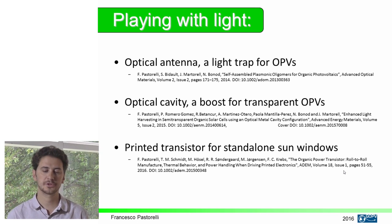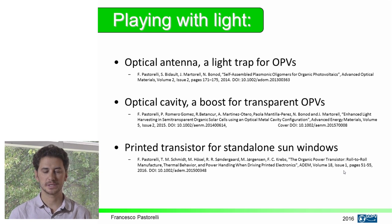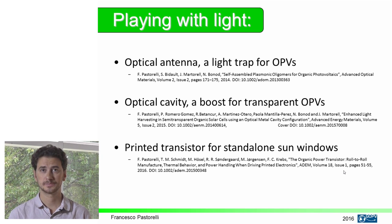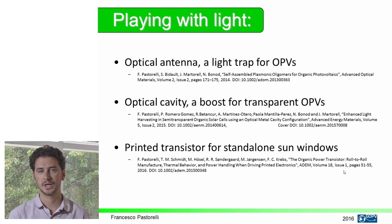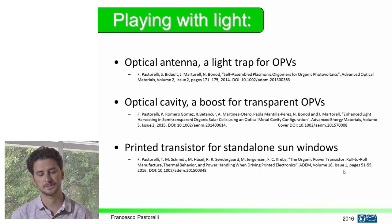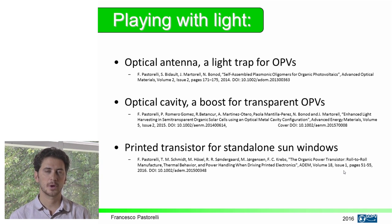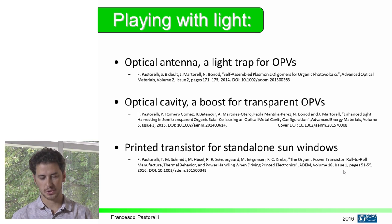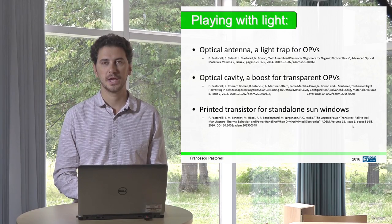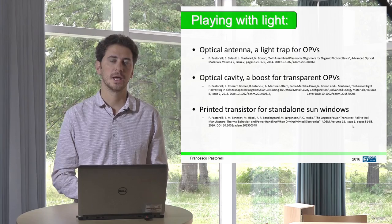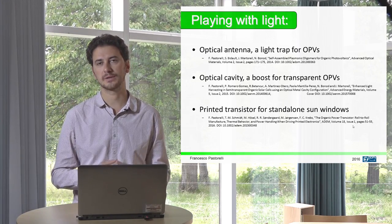From this introduction, we can now play with light in three different steps. The first step is at the nanoscale, where we are going to use an optical antenna to trap light in organic photovoltaics. The second part will regard an optical cavity that can trap light inside the thin film solar cell and boost transparent organic photovoltaics. The last part will be more applied, using a printed transistor for standalone smart windows — meaning we can print all the circuitry needed for smart windows in the same way as newspapers.